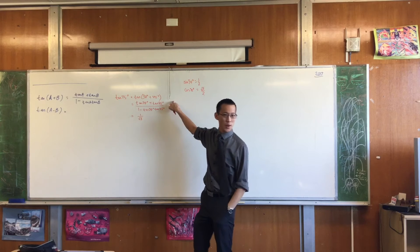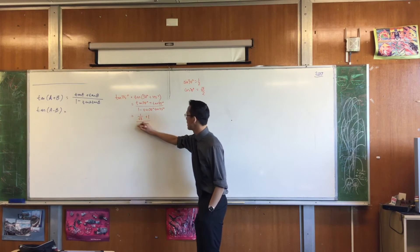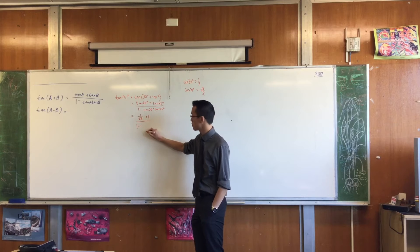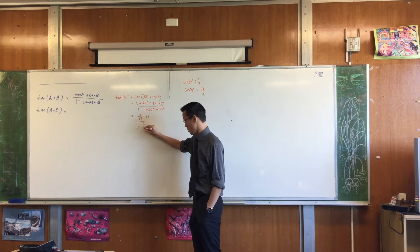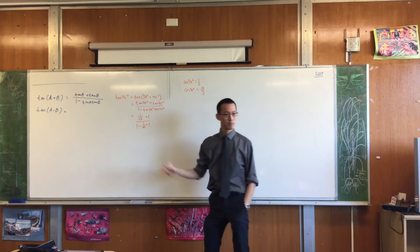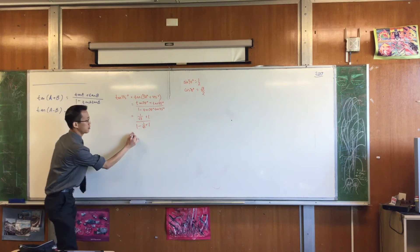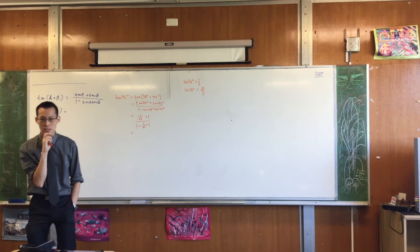1 on root 3. tan 45. That's an easy one. That's 1. That leaves us with 1 minus 1 on root 3 times 1. So far, so good. What can I do to simplify this a little bit? Because it's a bit of a mess at the moment.